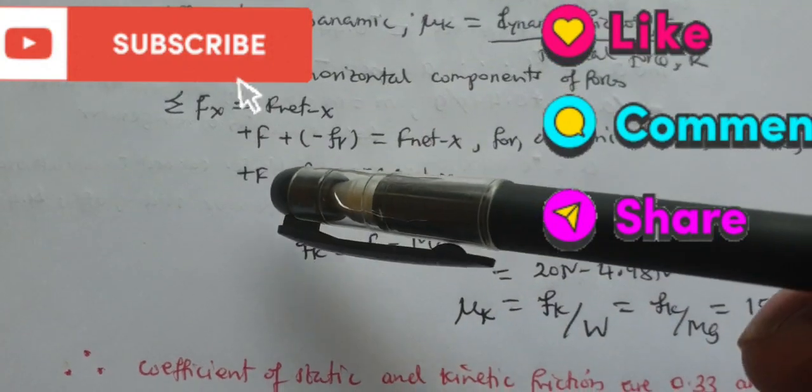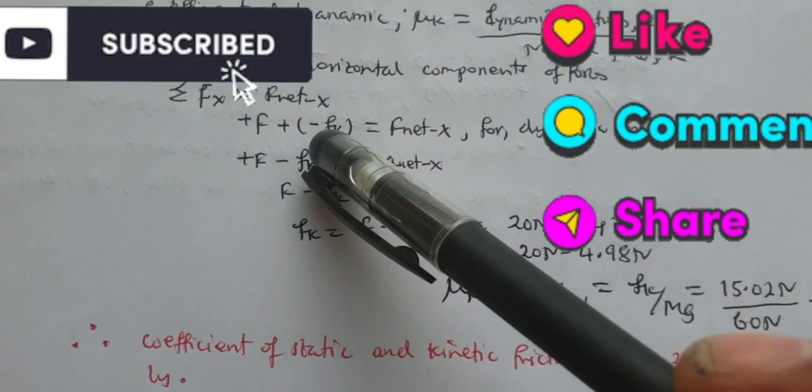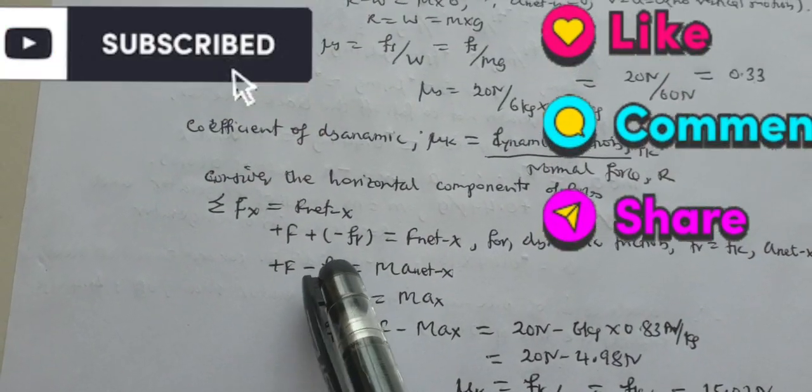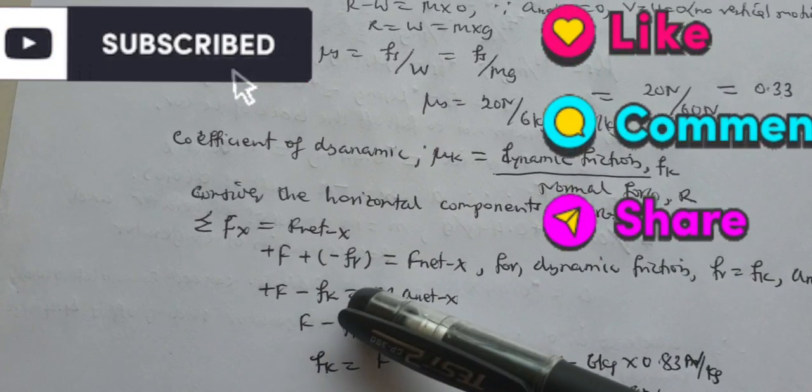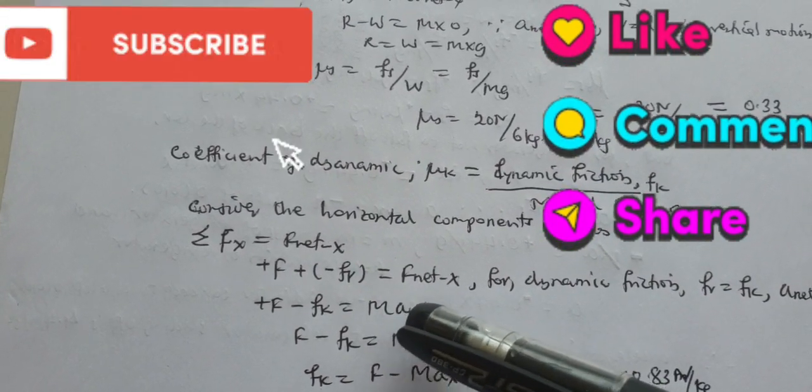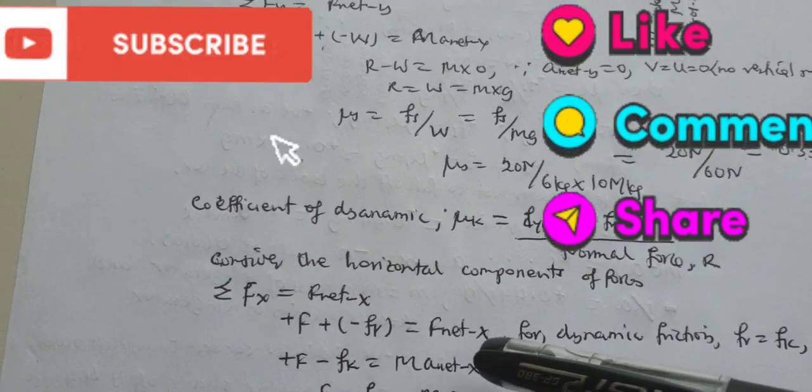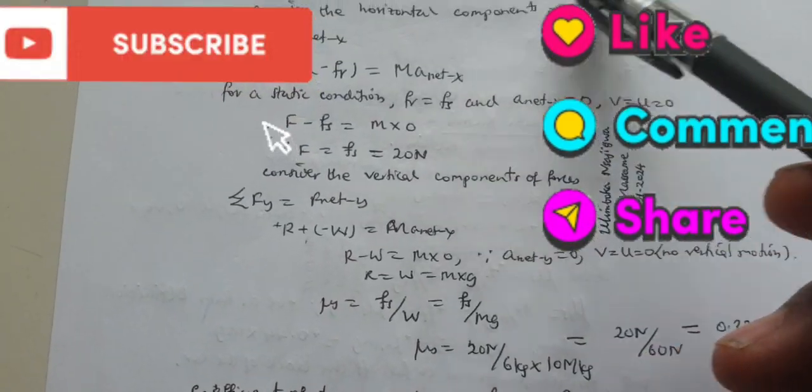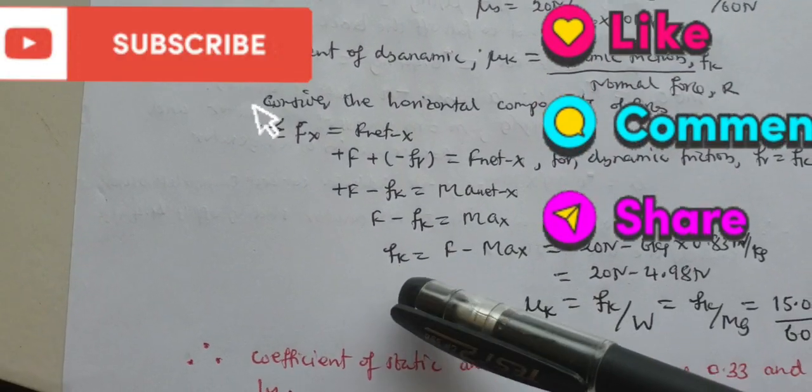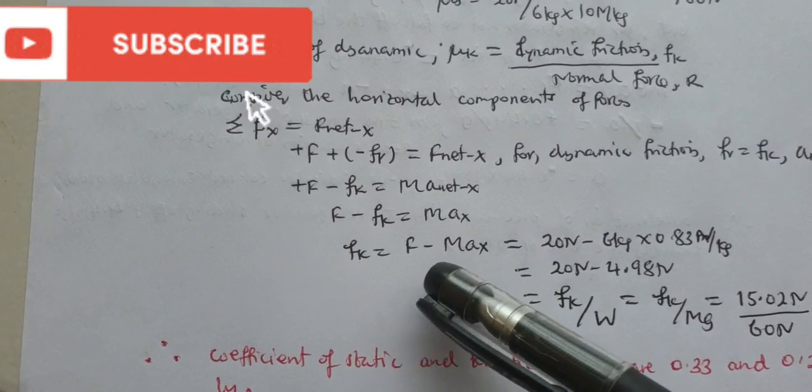Now F_r is becoming F_k for kinetic friction, and we have mass times net acceleration that is heading towards the right.